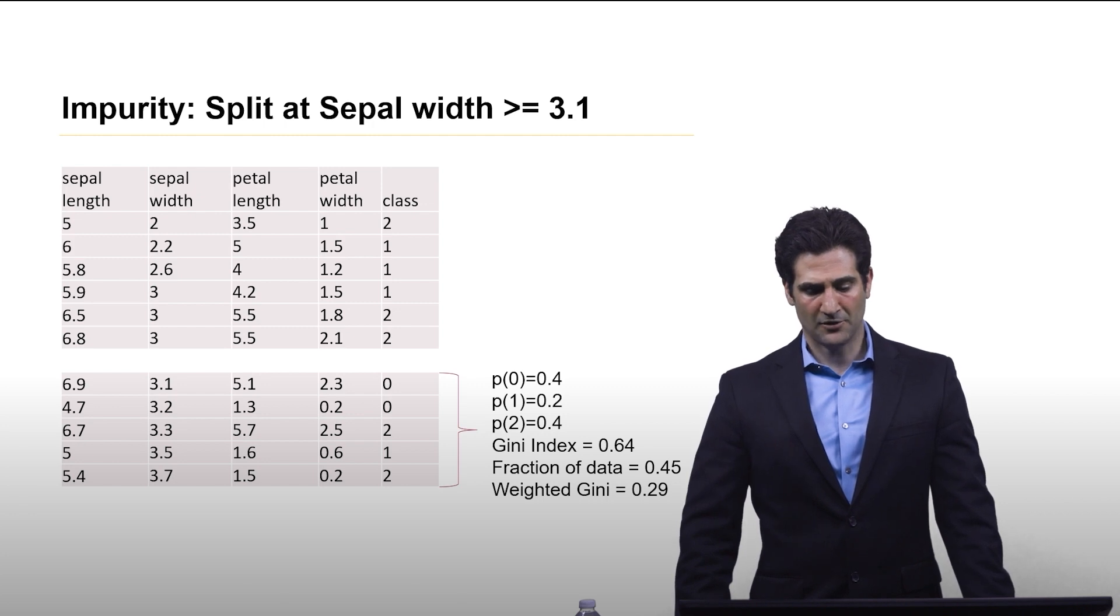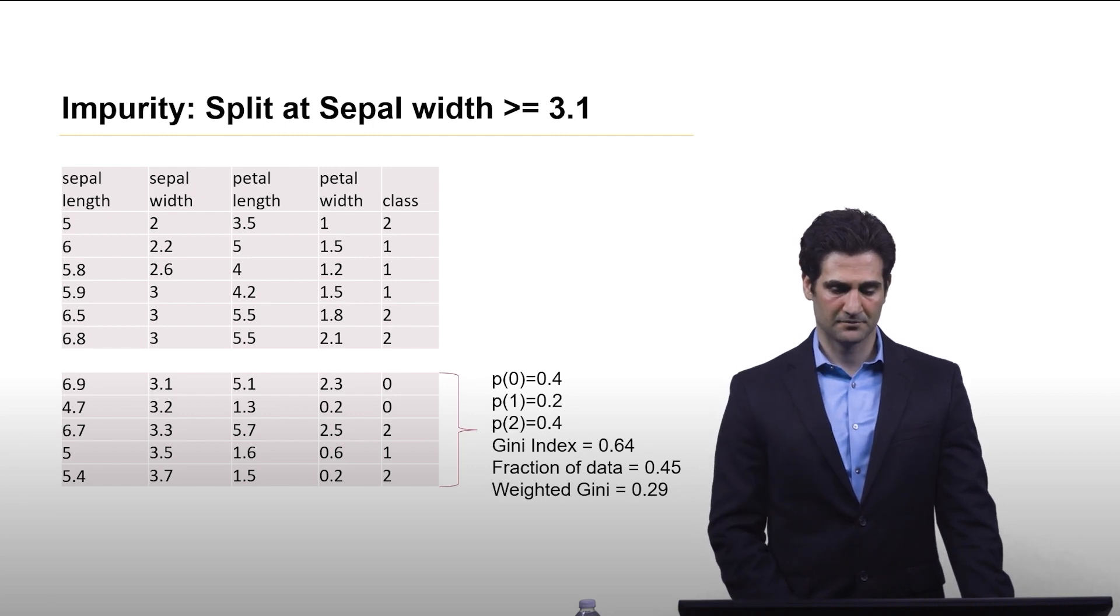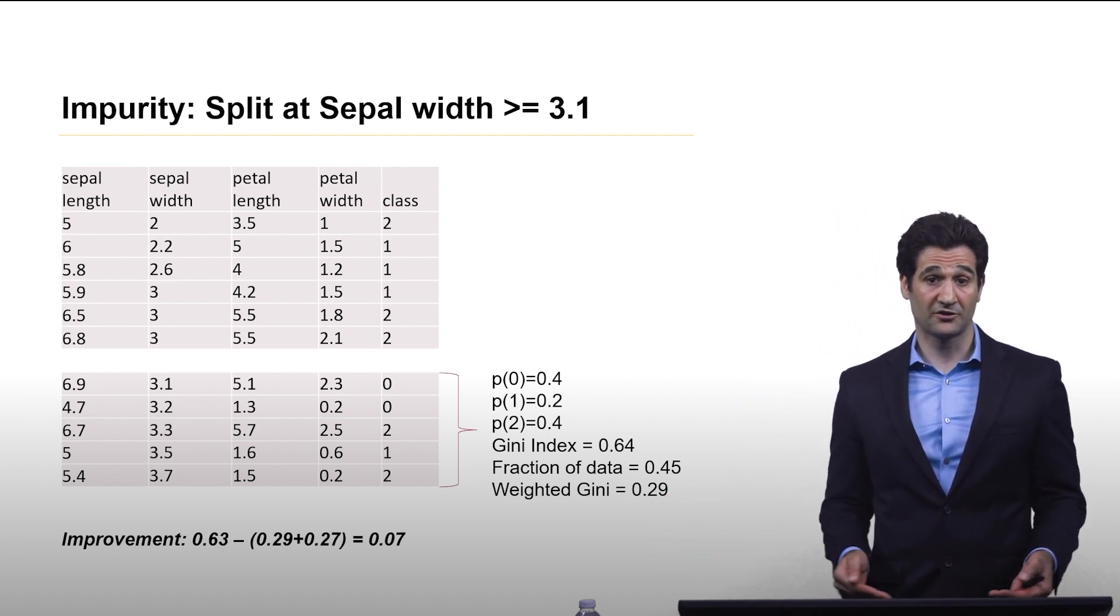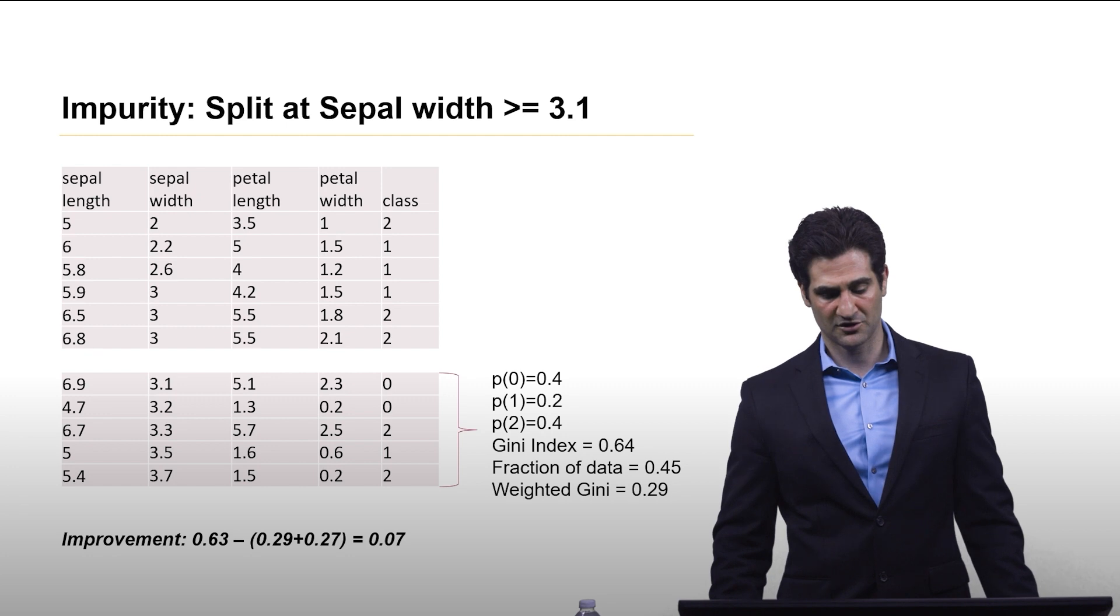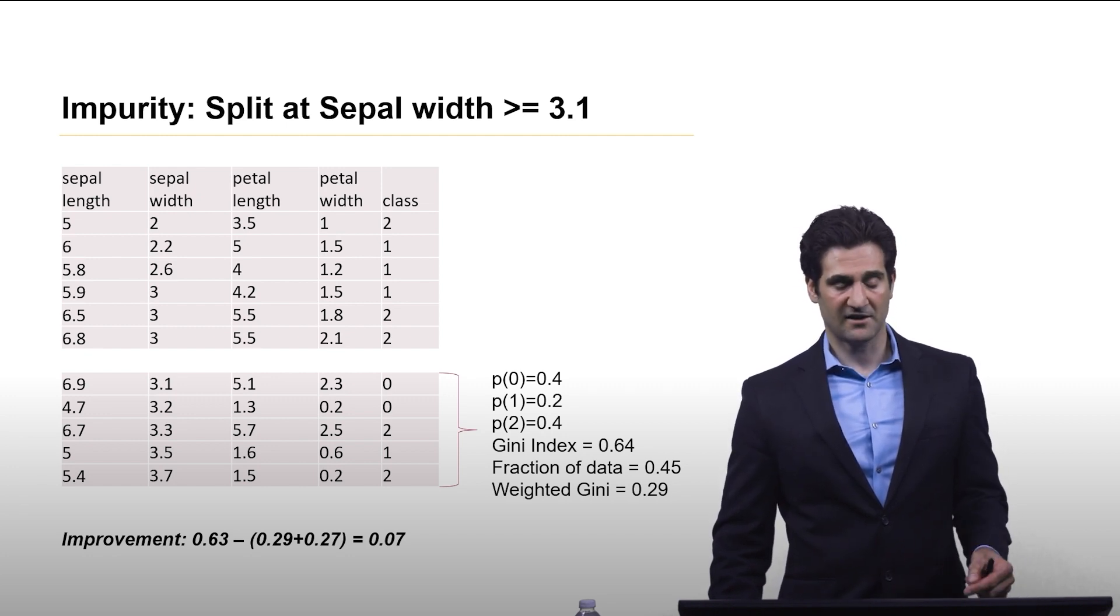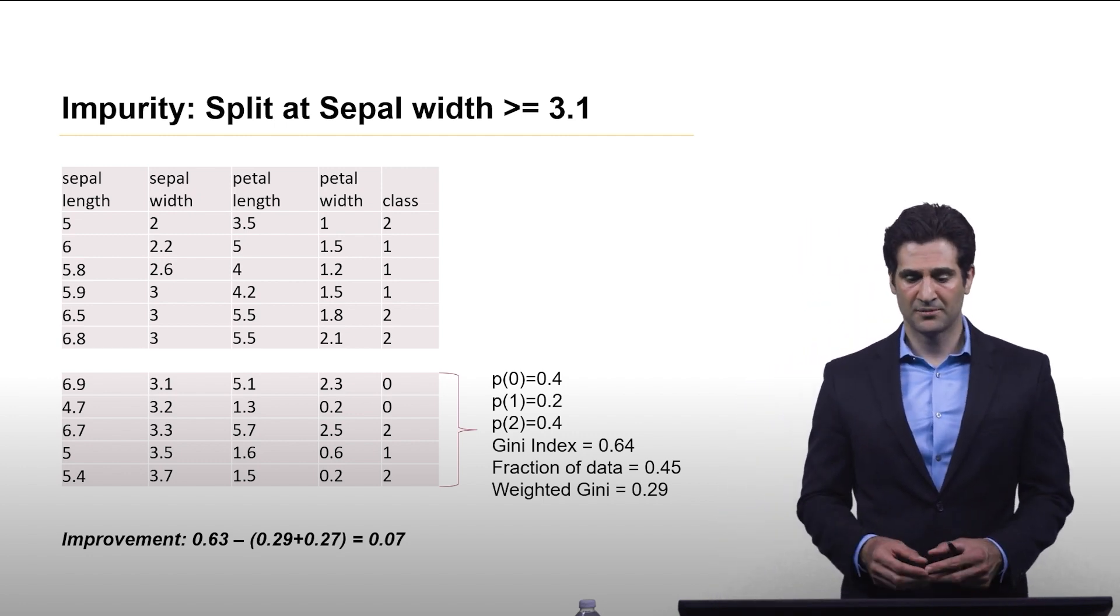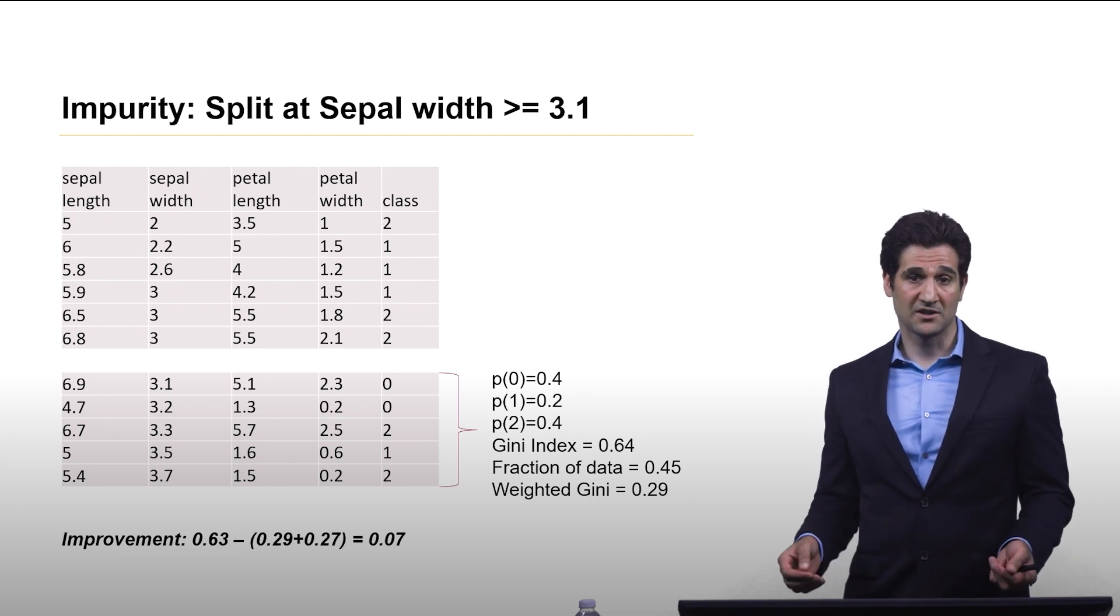Looking at the second half of the split, we have now probability of being in class 0 is now 0.4. And you have 0.2 and 0.4 for the other two classes. And this gives you a Gini index of 0.64. So this represents 45% of the data, so the weighted Gini index here is 0.29. So our improvement, we had originally a Gini index of 0.63 for everything. And then when we split it, we had weighted Gini indexes of 0.29 and 0.27. So when we subtract that from the original amount, you get 0.07. So impurity was reduced, on the whole, by a little bit. So it's not too bad of a split. It's making things somewhat more pure. But let's look at a different feature here.